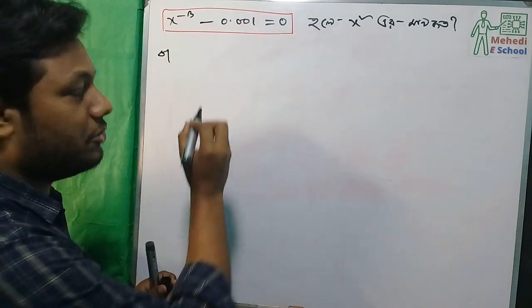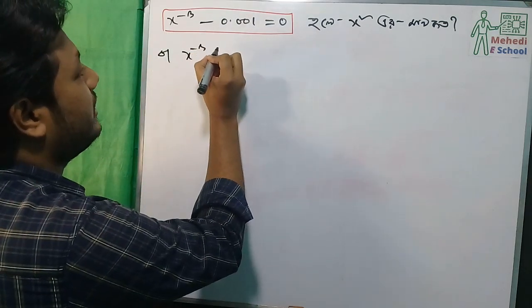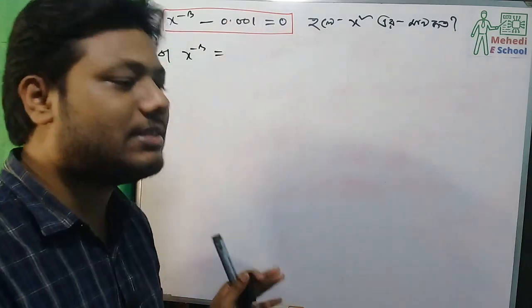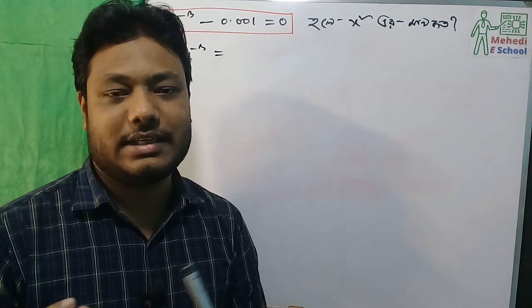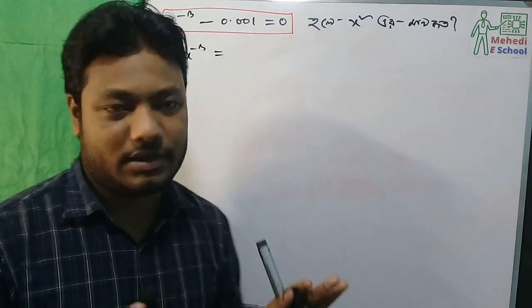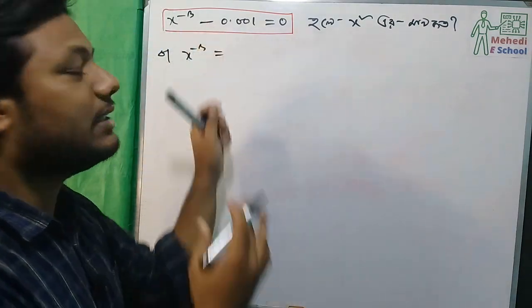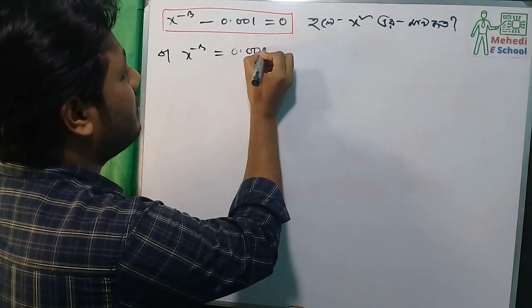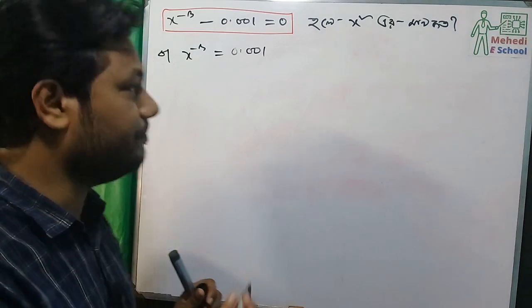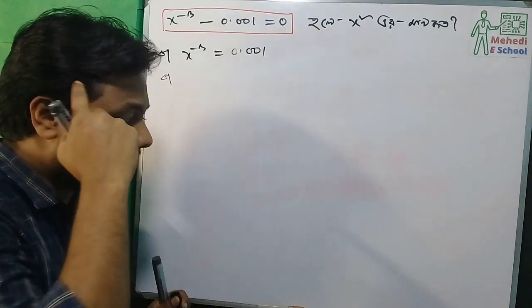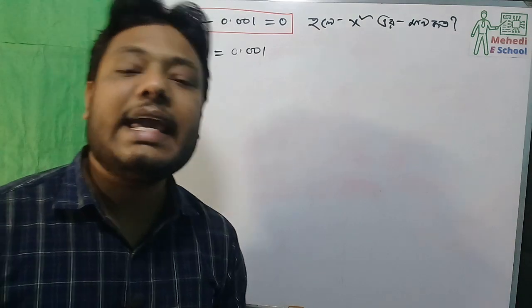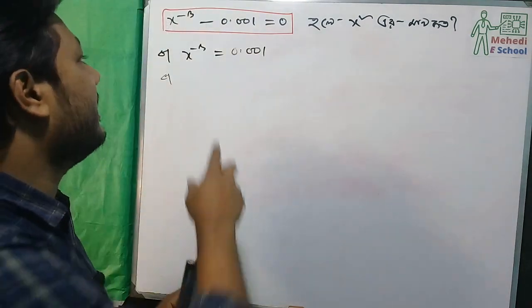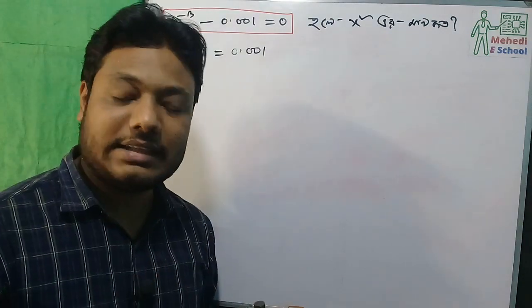x to the power minus cube, and that will be equal to a minus value. The value for f2 minus value is plus 0.001.